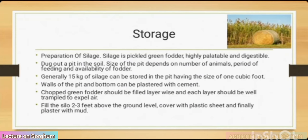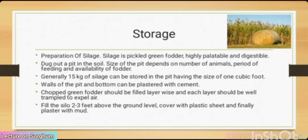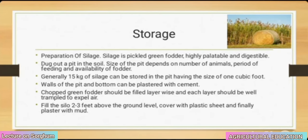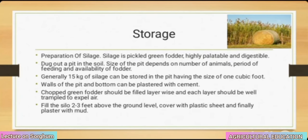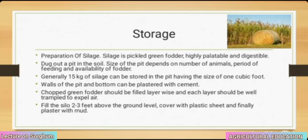Storage — preparation of silage: silage is pickled green fodder, highly palatable and digestible. Excavate a pit in the soil; the size of the pit depends on the number of animals, period of feeding and availability of fodder. Generally, 15 kg of silage can be stored in 1 cubic foot. Walls and bottom of the pit can be plastered with cement. Chopped green fodder should be filled layer by layer, with each layer well trampled to expel air. Fill the silo 2–3 feet above the ground level, cover with plastic sheets and finally plaster with mud.